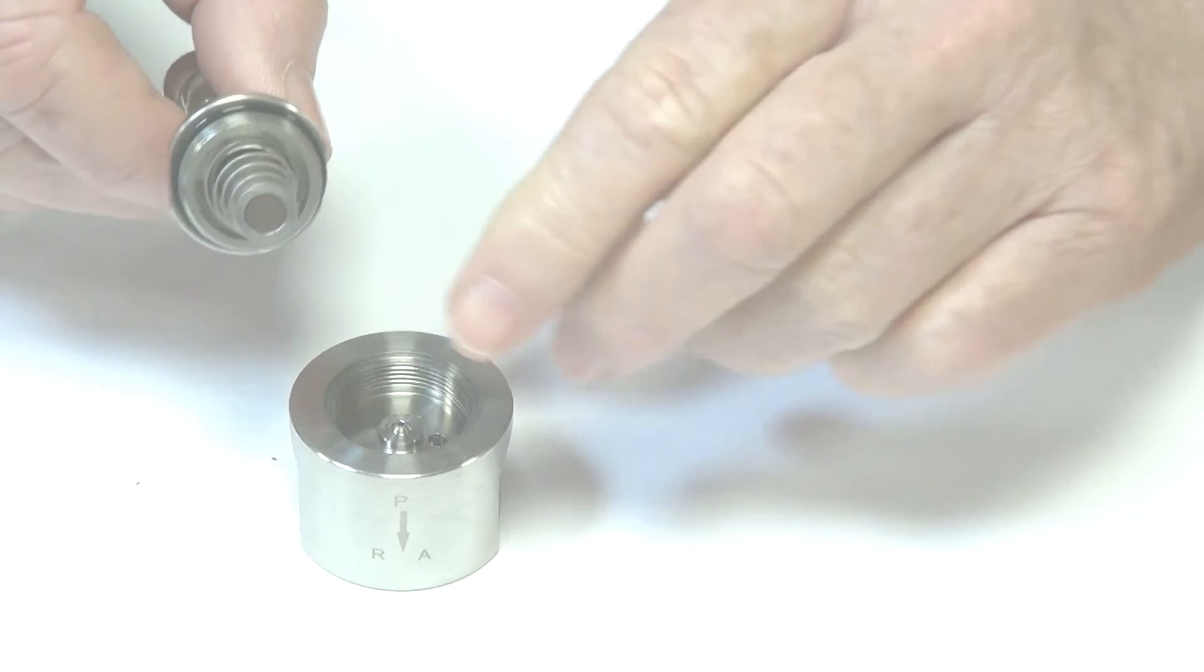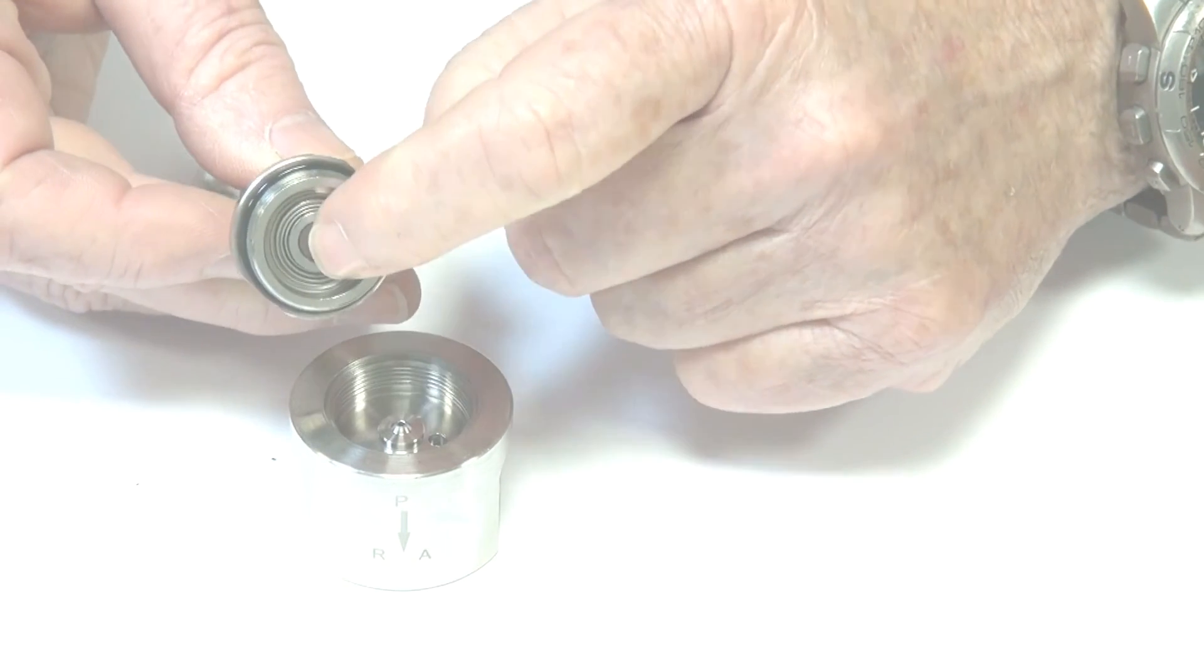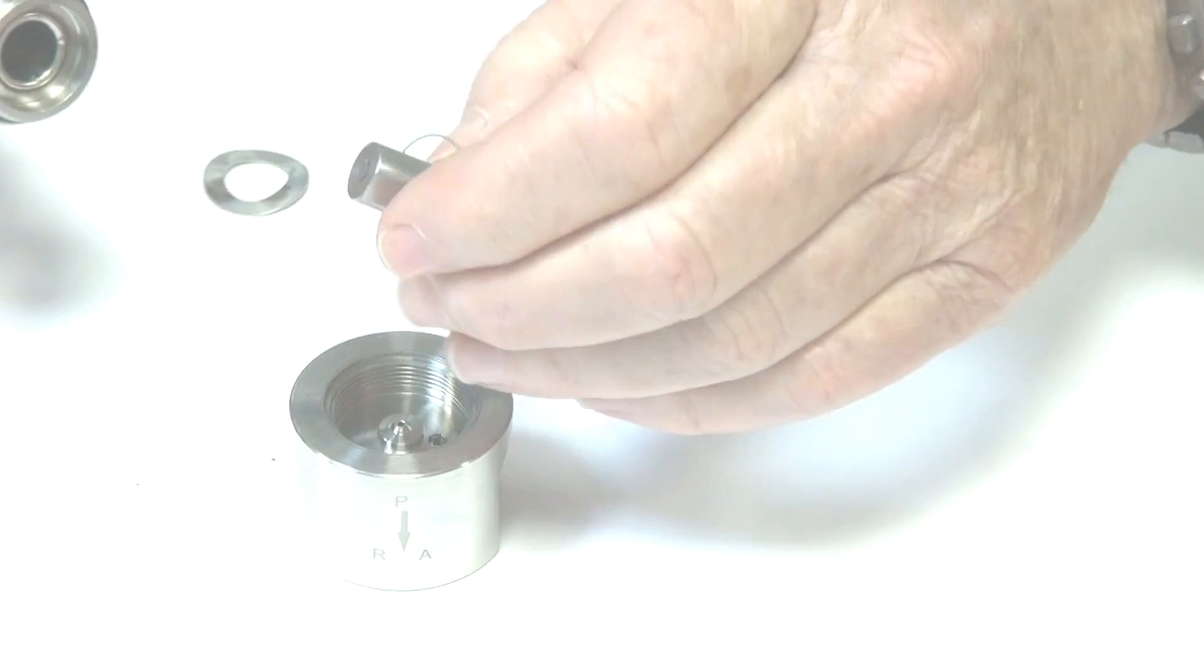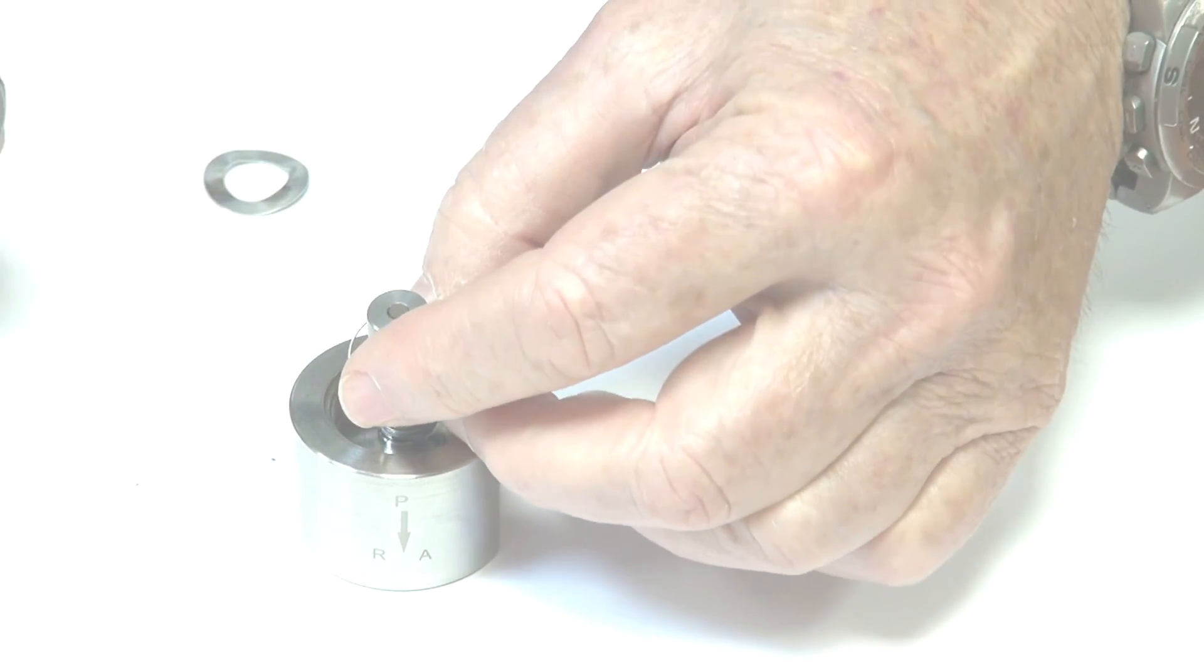Energized, the coil armature is pulled up. De-energized, it goes down and it's blocking off the exhaust port.